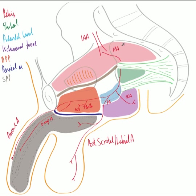Turning now to the pudendal nerve, it originates from the S2, S3, and S4 sacral rootlets. The pudendal nerve runs alongside the internal pudendal artery for a short course within the pelvis before exiting via the greater sciatic foramen. It loops around the ischial spine and sacrospinous ligament to run a short course in the gluteal region, and enters the perineum via the lesser sciatic foramen. As it runs within the pudendal canal, still alongside the internal pudendal artery, it gives rise to the inferior rectal nerve.